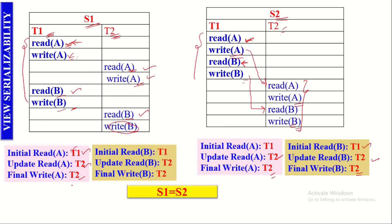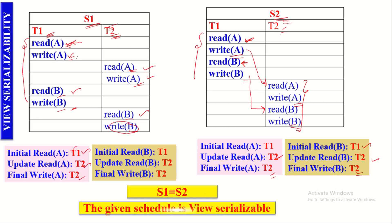So now we have noticed that all three operations — initial read, update read, and final write — on A in both schedules are performed by the same set of transactions: T1, T2, T2. And for B also, we can notice the same set of transactions performing the three operations: T1, T2, T2. That is why we can determine that S1 is view equivalent of S2. So when it is determined as view equivalent of its serial schedule, the given schedule S1 is view serializable, meaning it will always give consistent result.